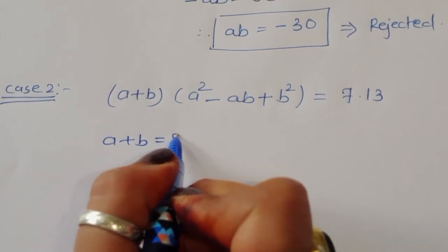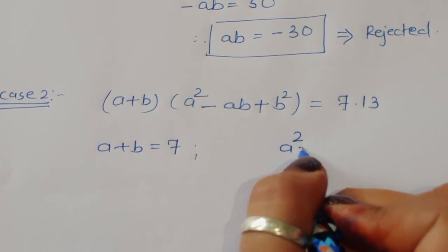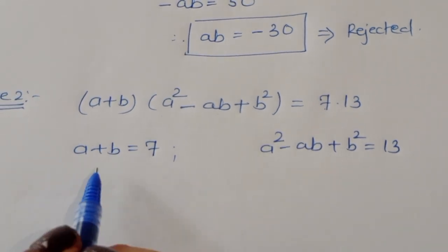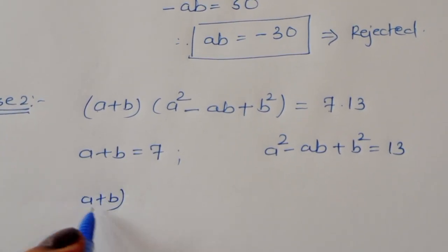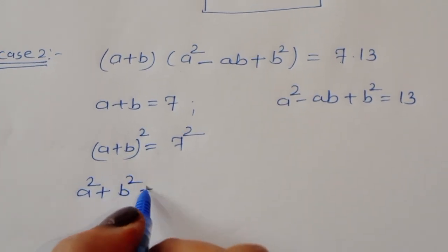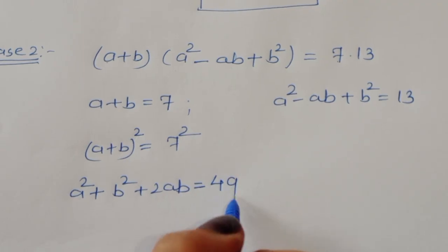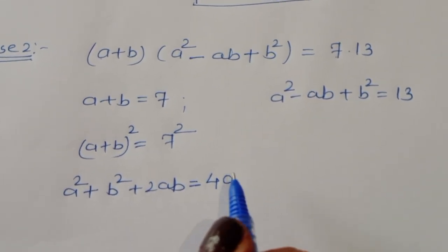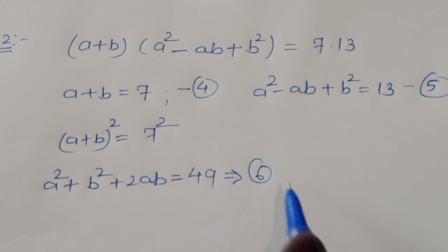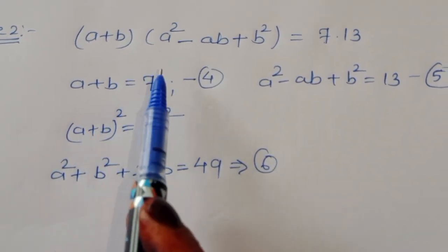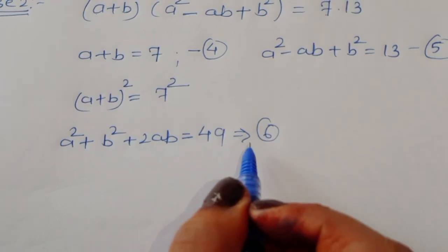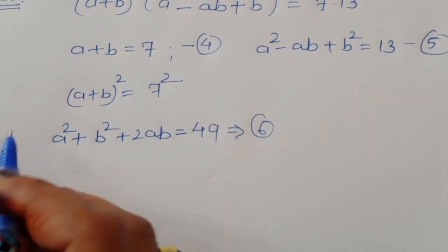Comparing LHS and RHS: a + b = 7 (equation 4) and a² − ab + b² = 13 (equation 5). Taking the square of equation 4: (a + b)² = 7², so a² + b² + 2ab = 49 (equation 6). Now we have equations 4, 5, and 6.